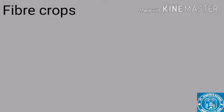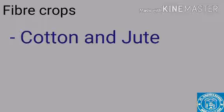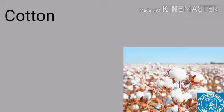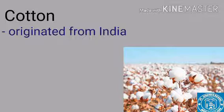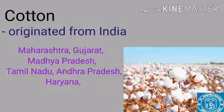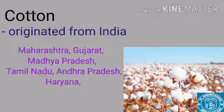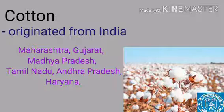Now we will see fiber crops. Fiber crops are of two types: cotton and jute. India is the third largest producer of cotton in the world, and it is believed that cotton originated from India. It is grown in Maharashtra, Gujarat, Madhya Pradesh, Andhra Pradesh, Haryana, and Tamil Nadu. Cotton grows in black soil with light rainfall, does well in tropical and subtropical areas, and is a Kharif crop.